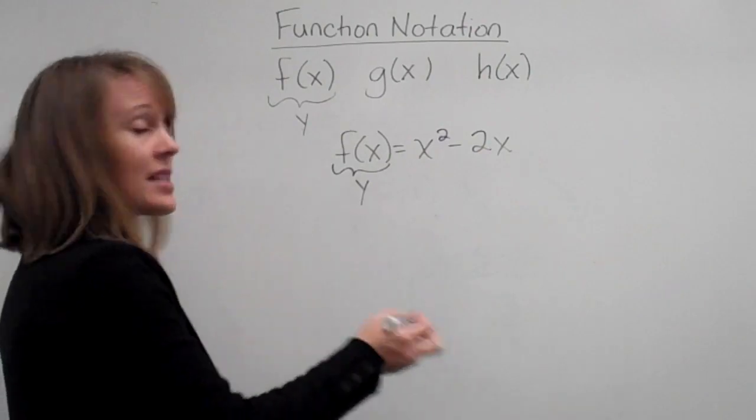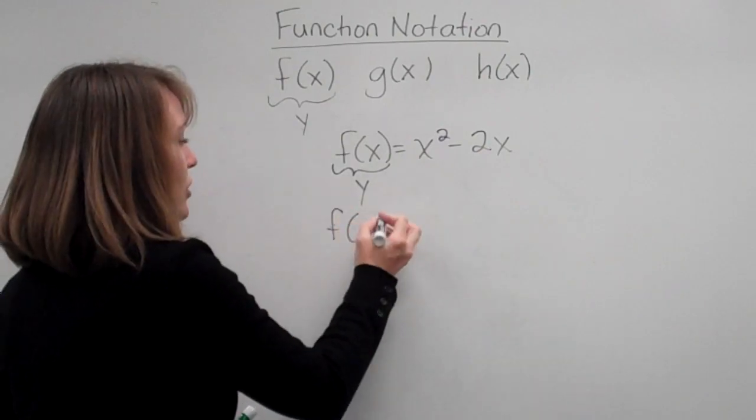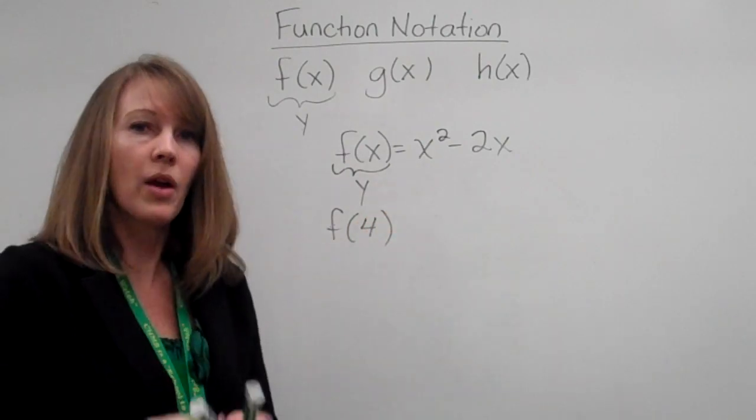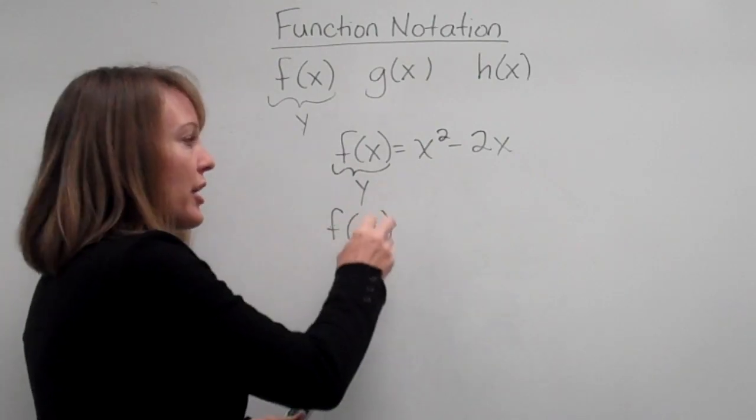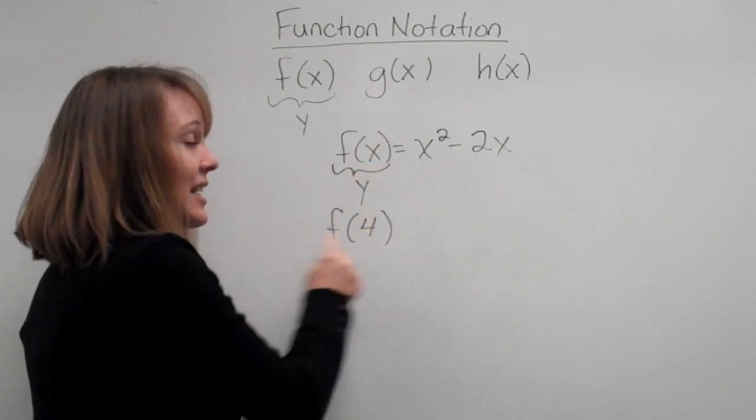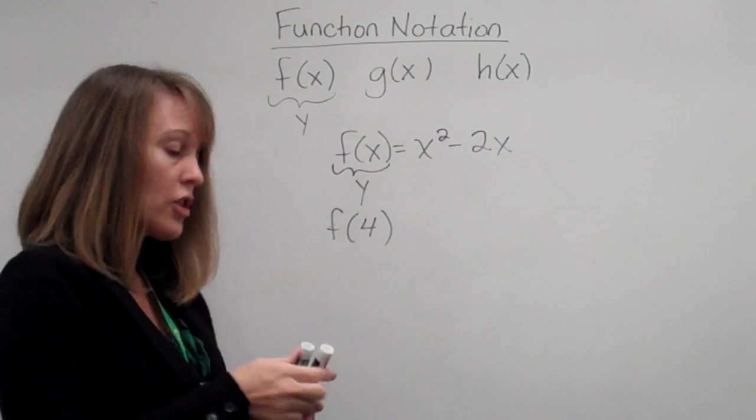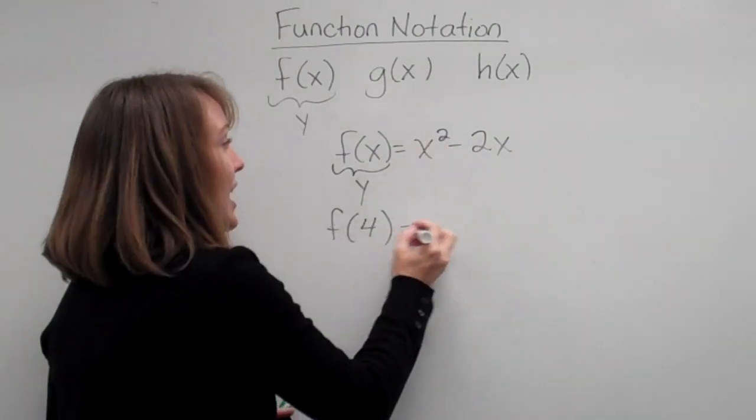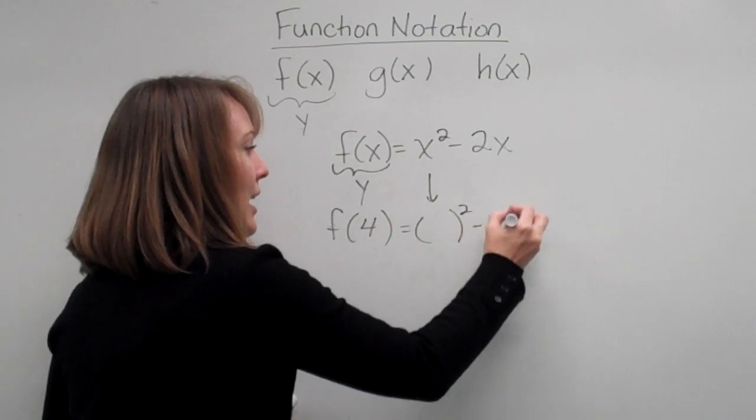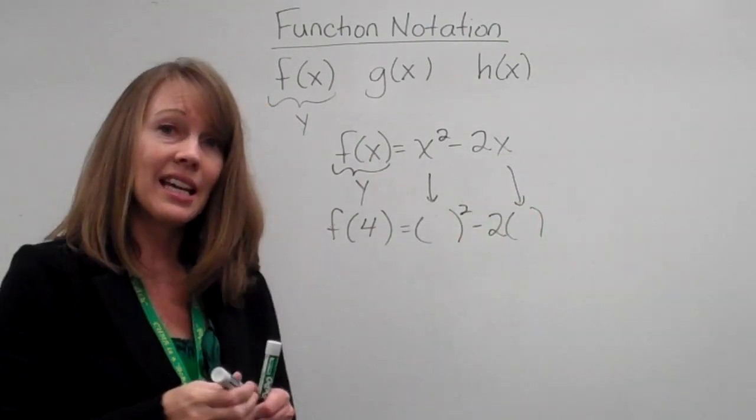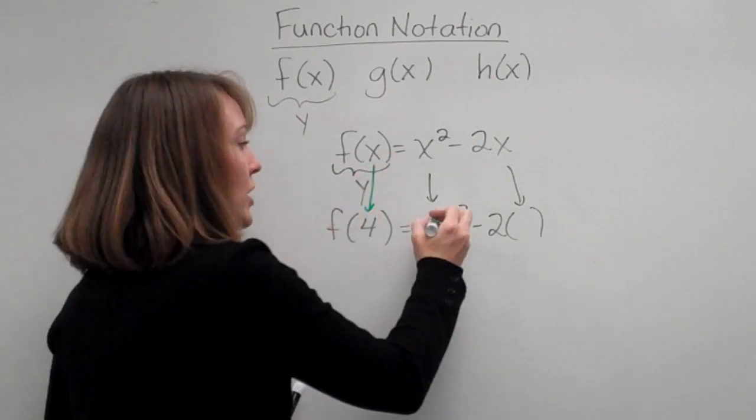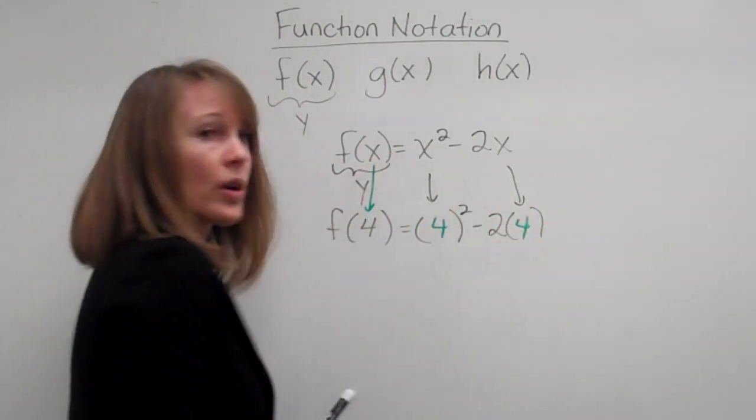Now the other notation we're going to see is this: if I ask you to find f(4), what that means is I want you to find y, right, this is still y, if x is equal to 4. So I'm asking you to take this equation, take out the x, and put in what x is. And in this case, x is 4. So we're going to put a 4 in here and a 4 in here.